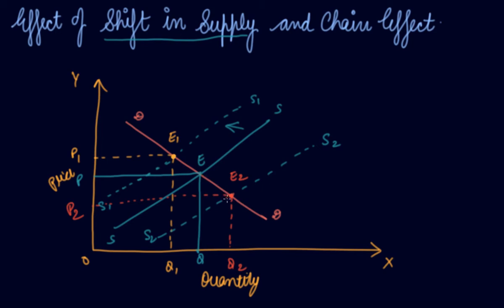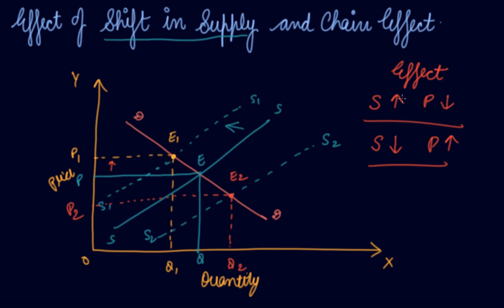If your supply increases, the quantity of supply increases — there is a lot of supply in the market but buyers are not there to buy the product. The supplier has to reduce prices, so price comes down from p to p2. If your supply decreases, there are a large number of buyers who want the product but there is no supply in the market, so it will ultimately increase the price of your commodity.